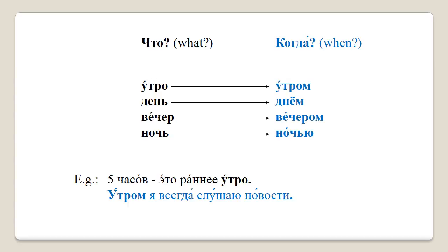We've seen how to say 'nine o'clock in the morning' or 'nine o'clock in the evening' — those forms are literally translated as 'of the morning' or 'of the evening' and can only be used in time phrases. These new forms literally stand for 'in the morning,' 'in the afternoon,' 'in the evening,' and 'at night,' and can be used on their own without indication of time. Please repeat after me: утром, днём, вечером. Notice the difference: '5 часов — это раннее утро' (5 o'clock, it's early morning) versus 'утром я всегда слушаю новости' (in the morning, I always listen to the news).